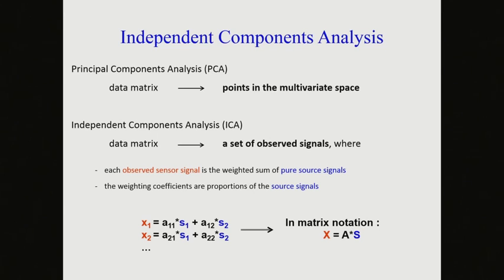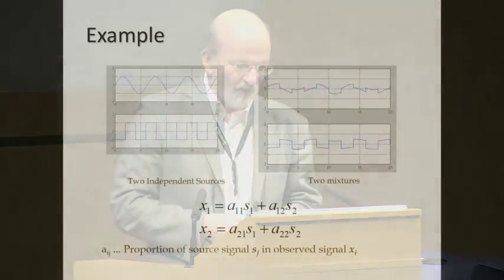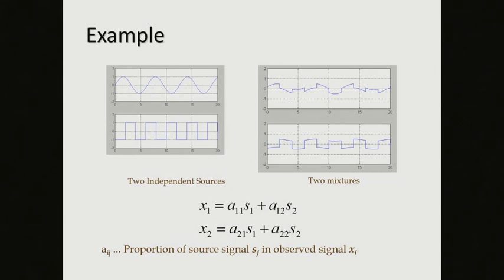In the ICA situation, each line is a mixed observed signal containing source signals that you don't know, in proportions that you don't know, but you want to know them. You decompose each line in the matrix into a series of source signals with the corresponding proportions. PCA looks at the data matrix as points in multivariate space; independent components analysis looks at it as a set of observed signals.